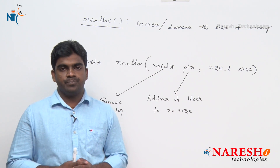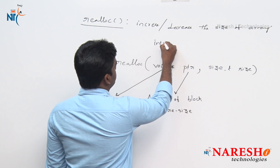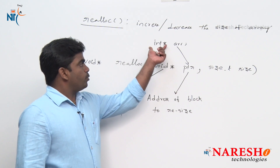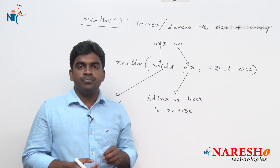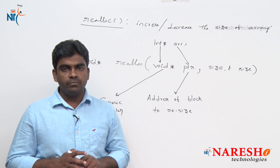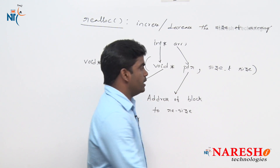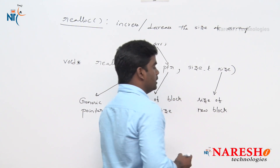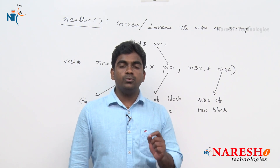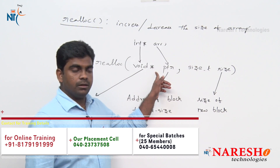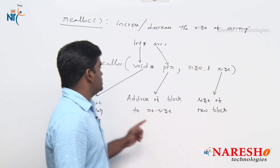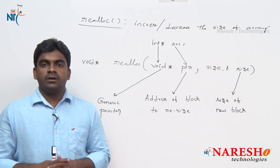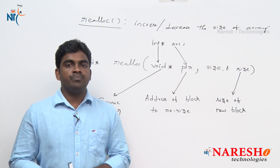That is why they have given it as a void pointer — it will be converted automatically. Suppose you are passing an integer array pointer to decrease, it will be converted automatically into void pointer. Every pointer will be converted into void pointer. The second argument is the size of the new block — either increased memory or decreased memory. It returns the base address of the block once again.